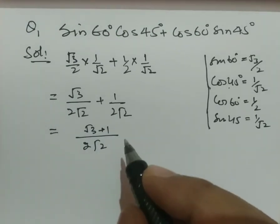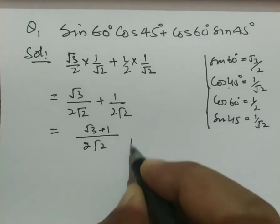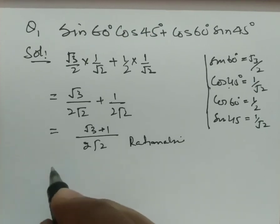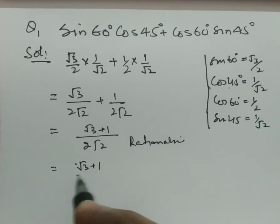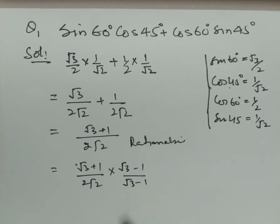You may leave this answer, but I want to rationalize. So rationalize this value. That is root 3 plus 1 over 2 root 2 times root 3 minus 1 over root 3 minus 1.